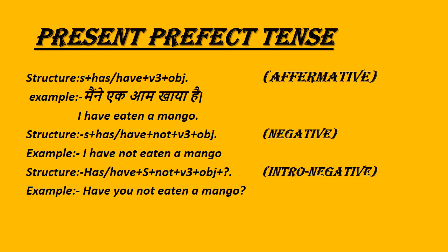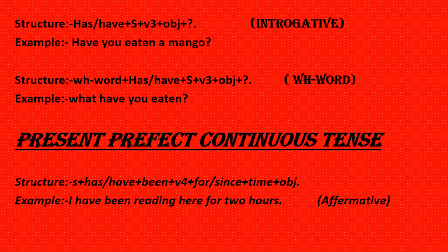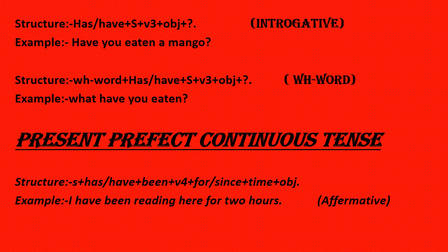The interrogative structure is: has/have + Subject + V3 + Object + question mark. Example: Have you eaten a mango?